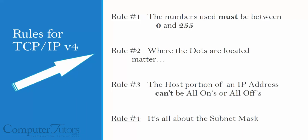In an earlier lesson, I talked about some rules. Rule number one is the numbers used in an IP address must be between 0 and 255. Rule number two is that the dots matter a lot — 192.168 is different than 19.68, so the dots are very important. I'm going to add two more rules. Rule number three is the host portion of the IP address can't be all-ons, nor can it be all-offs. We'll have a full lesson on this, but I'll remind you about rule three often.